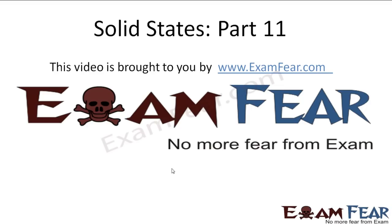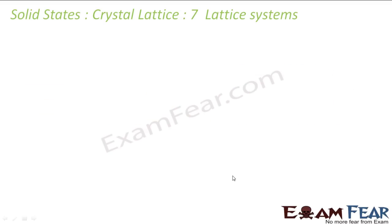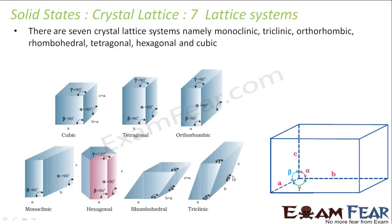Hello friends, this video on solid states part 11 is brought to you by examca.com. As we have told, crystal lattices are made of unit cells, and the unit cell has parameters alpha, beta, gamma, a, b, and c. If you vary these parameters, you get different varieties of unit cells. Experimentally it has been seen that there are only four different types of unit cells based on alpha, beta, gamma and a, b, c, and they are called the seven lattice systems.